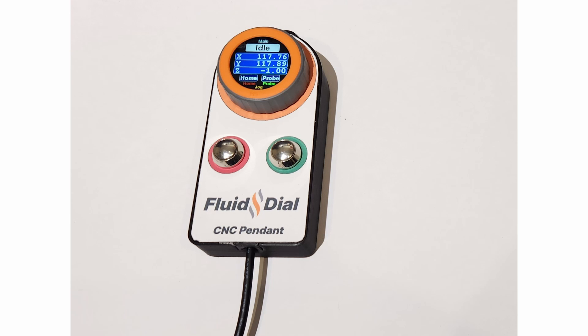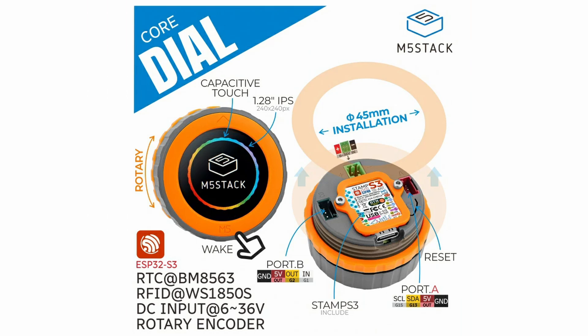The electronics of this pendant are super simple. It uses an M5 dial device from M5Stack. This device has a small touch screen, an encoder knob, and a few spare I/O pins. The encoder knob also has a built-in switch that is activated by clicking the bezel. It is powered by an ESP32-S3 and costs about $35.